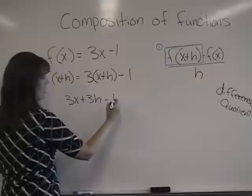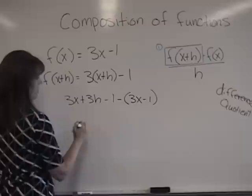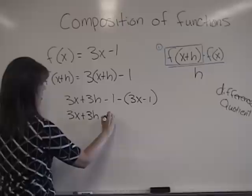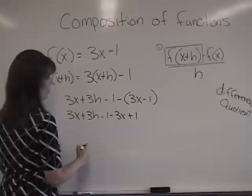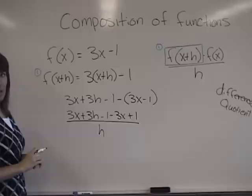Okay, now the difference quotient says minus f of x. Well, what is f of x? It's 3x minus 1. So I'm going to say minus 3x minus 1. So we have this part minus f of x. So I just did the minus f of x. Now let's distribute that negative sign through, which gives us 3x plus 3h minus 1 minus 3x plus 1. We just changed the signs there, distribute that through. That is all over h.